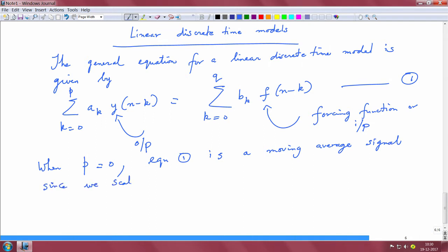Since we scale the input over a q+1 window—q+1 because from k equals 0 to q you have q+1 points—therefore over a q+1 window you are going to average the signal.